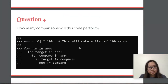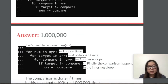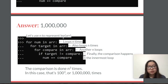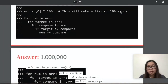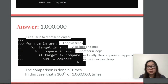For question four, how many comparisons will this code perform? The first line loops 100 times since we are making a list of 100 zeros, giving 100 values inside the array. For each of those, there are 100 more iterations nested, and another 100 within that, making 100 times 100 times 100 equal to 1 million. So the comparison will happen 1 million times.